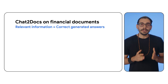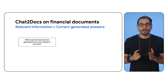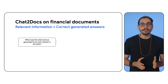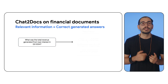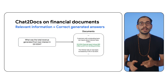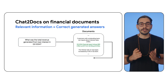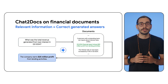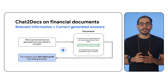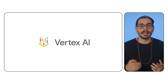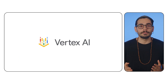With the tuned embeddings model, our chat-to-docs application can then accurately retrieve the relevant information in the financial documents and provide the correct answer to the revenue question. So, how will we accomplish embeddings tuning? That's when Vertex AI comes in to help.